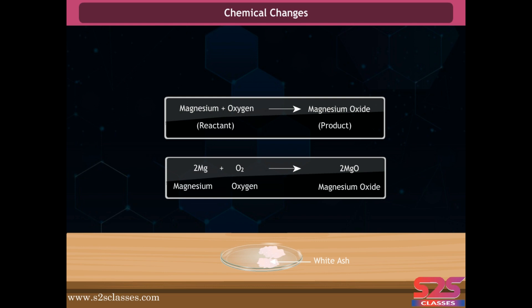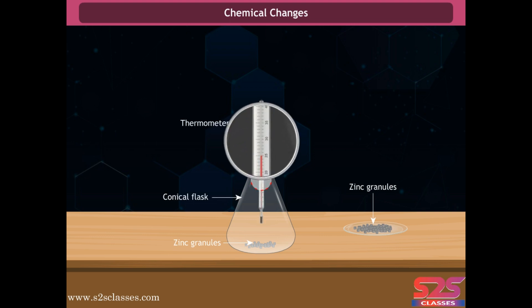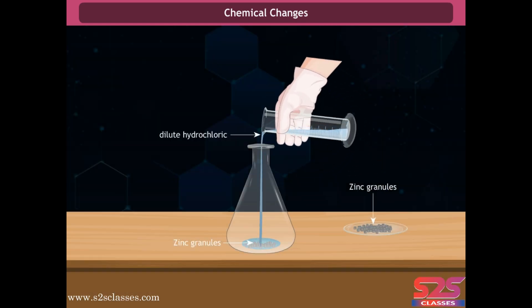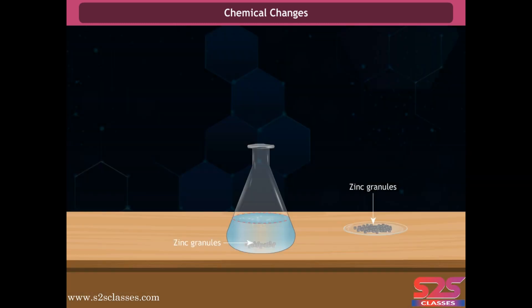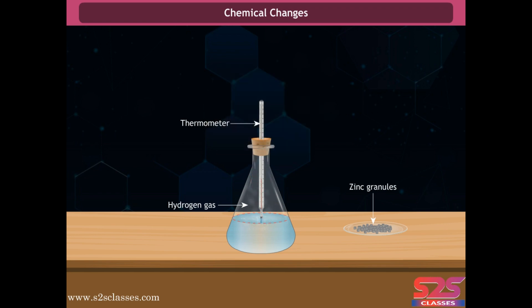Take a few zinc granules in a conical flask, insert the thermometer and note its reading. Add dilute hydrochloric acid to it and note the thermometer reading again. You will observe that gases evolve around the zinc granules and the temperature rises. This shows the formation of gas during the chemical reaction and also demonstrates an exothermic reaction.